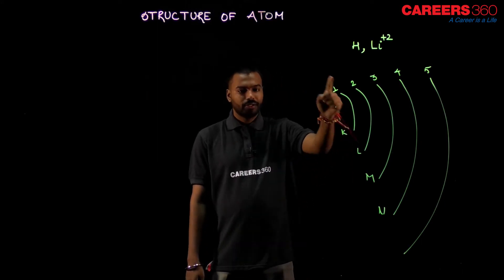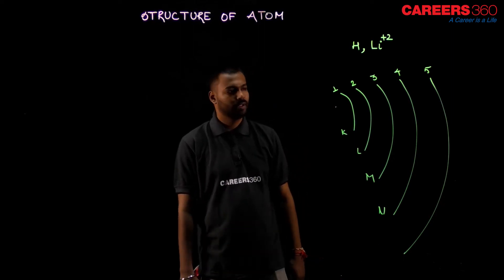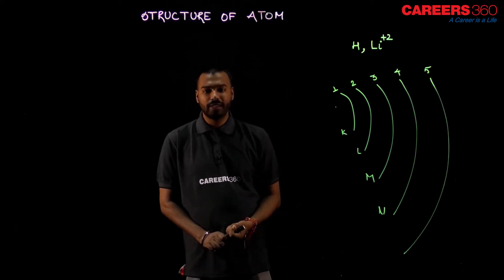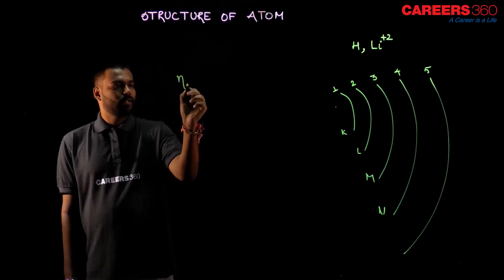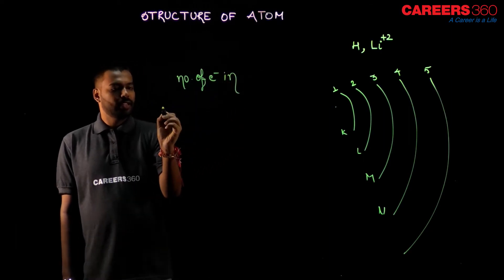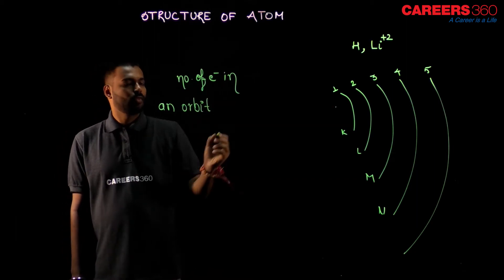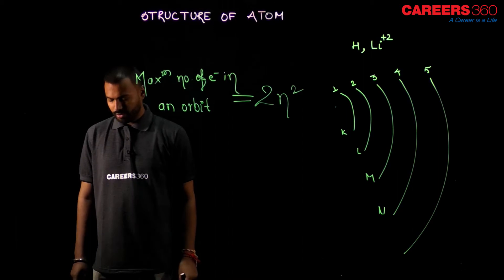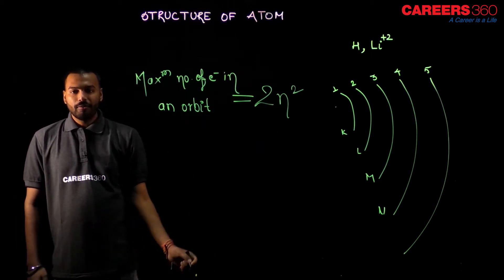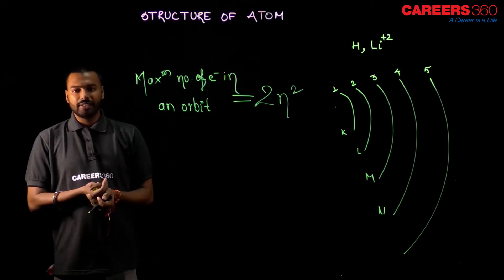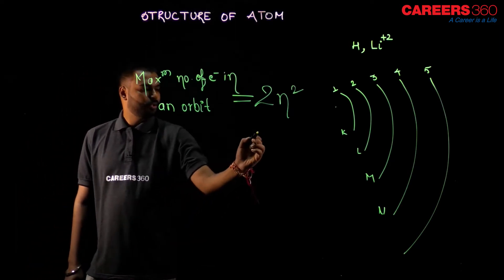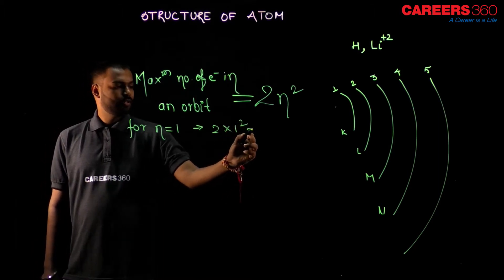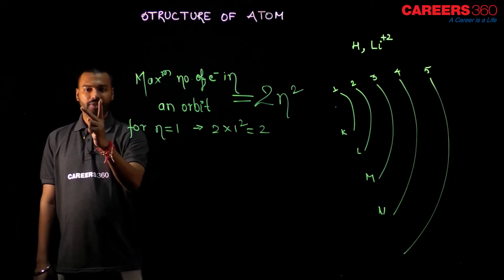Niels Bohr says that the maximum number of electrons in an orbit can be calculated with the formula 2N². For N = 1 (the K shell, first orbit): 2 × 1² = 2. So in the very first orbit, only 2 electrons can live. For N = 2: 2 × 2² = 8. So the maximum number of electrons in the second orbit is 8.